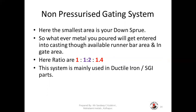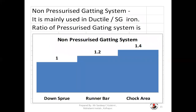Now we go to the non-pressurized gating system. Here the smallest area is your downsprue, so whatever metal you pour will enter the casting through the available runner bar and ingate area. The ratio of downsprue, runner bar, and ingate is 1 : 1.2 : 1.4. This system is mainly used in ductile iron or similar parts. Since the ingate area is free and larger, there is no restriction in metal flow and no back pressure.